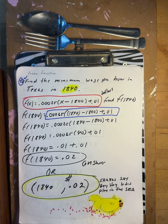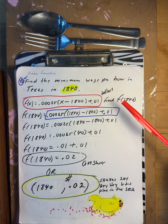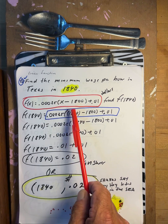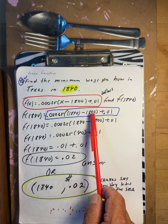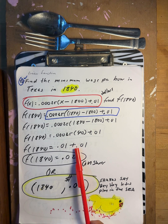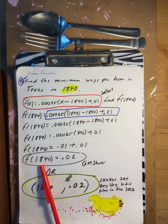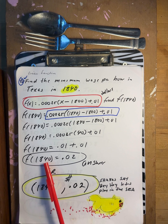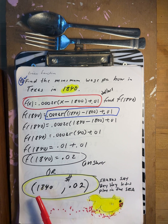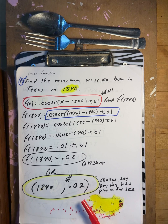Find the minimum wage per hour in Texas in 1840 — 40 years ahead. f of 1840: 1840 minus 1800 gives 40. 40 times 0.0025 is 0.01, plus 0.01 is 0.02. So in 1840, minimum wage per hour was two cents.